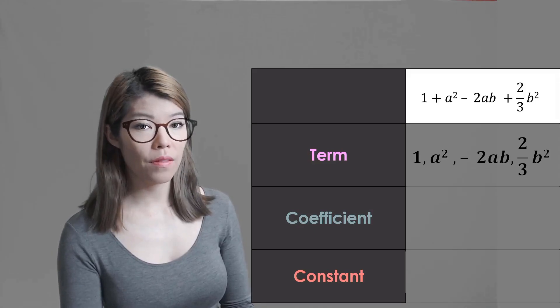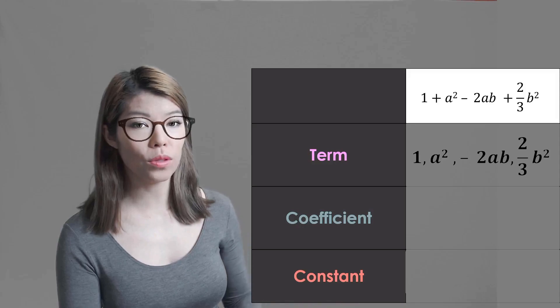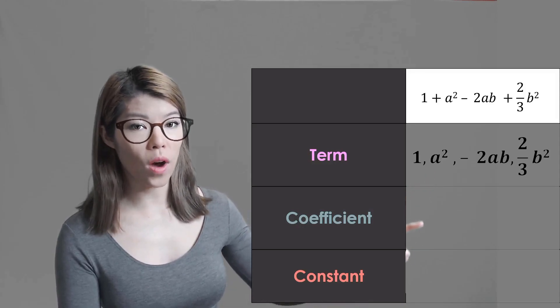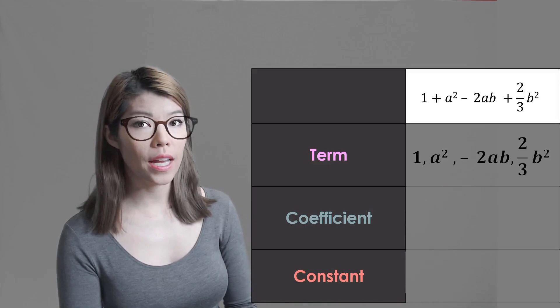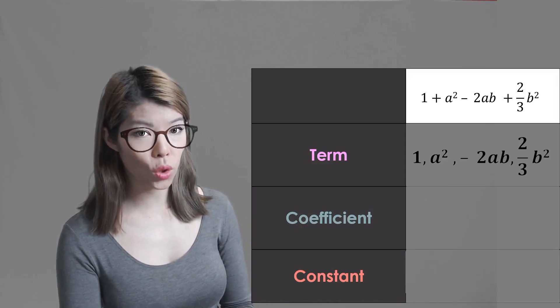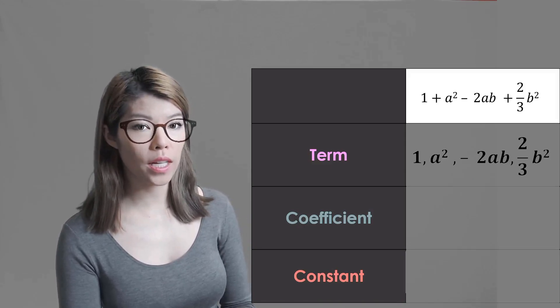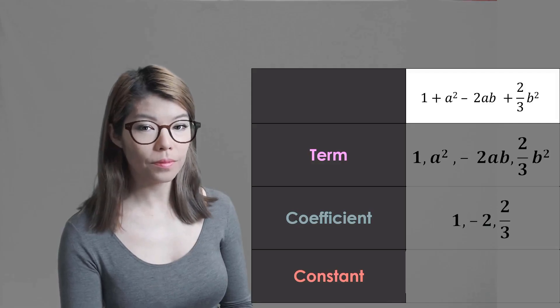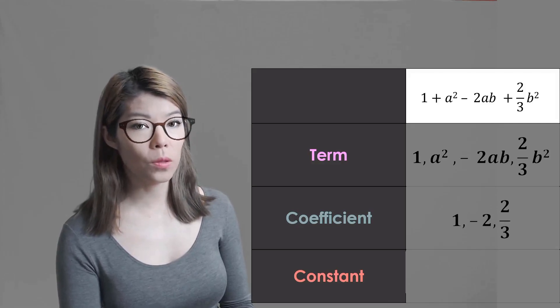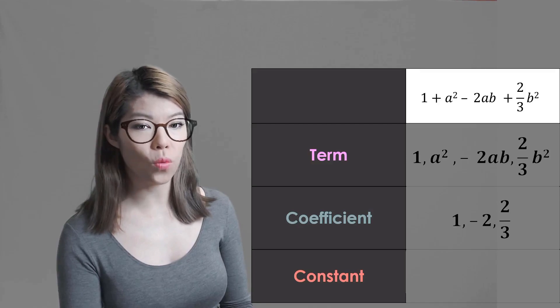So we only have three terms that have variables. So the coefficient of a squared is 1. The coefficient of negative 2ab is minus 2. And the coefficient of b squared is 2 thirds. And lastly there is only one constant and that is 1.